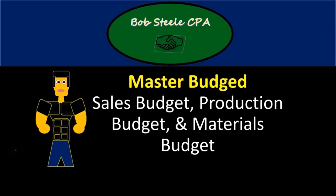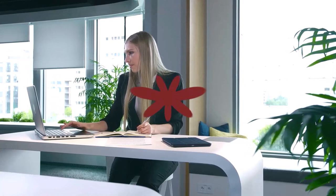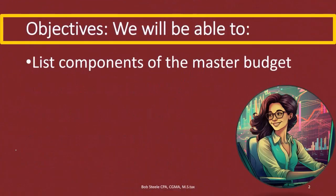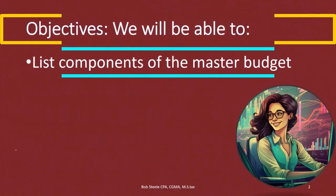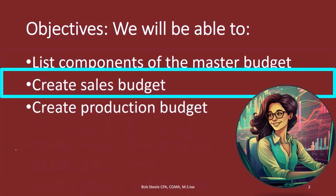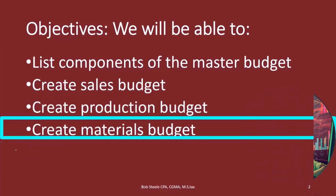In this lecture we're going to talk about the master budget. We're going to go through the sales budget, the production budget, and the materials budget. At the end of this we will be able to list the components of the master budget, create the sales budget, create the production budget, and create the materials budget.